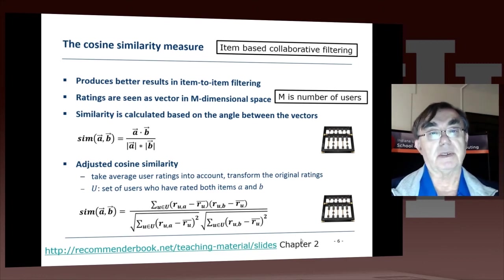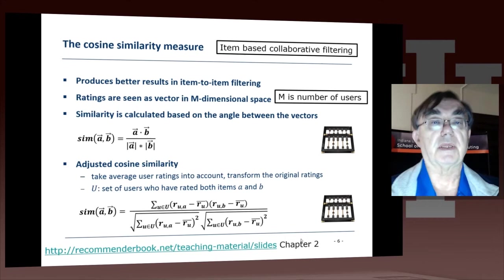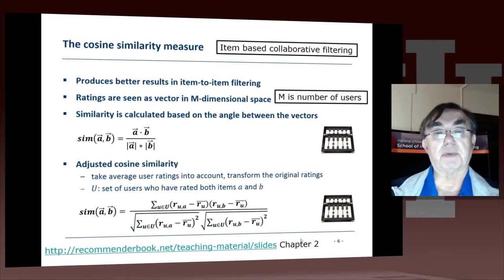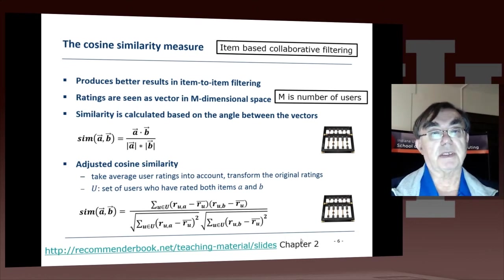The only issue is whether we think of users in the space where the dimensions are items, or items in the space where the dimensions are users. So we have vectors in this m-dimensional space, where m is the number of users, and we can calculate the similarity in many ways.